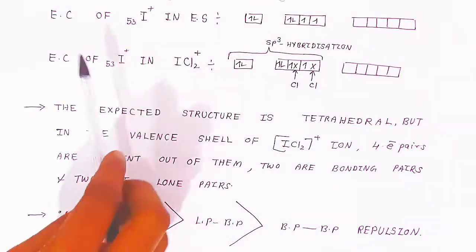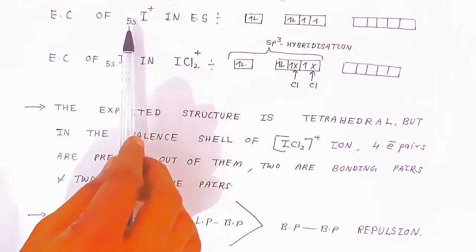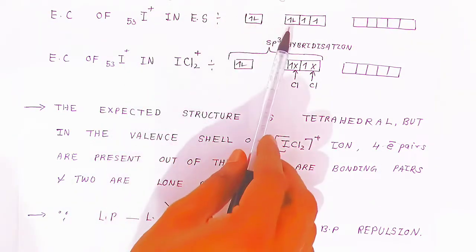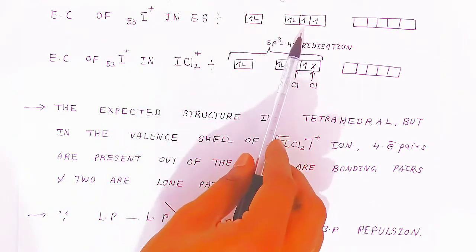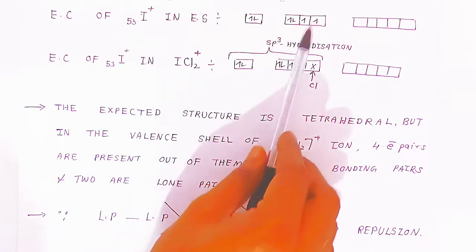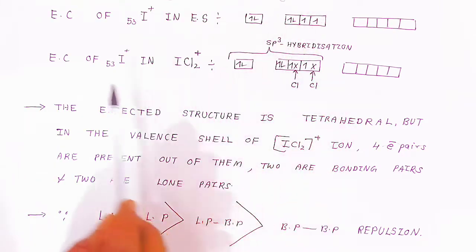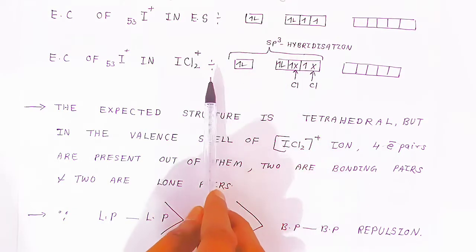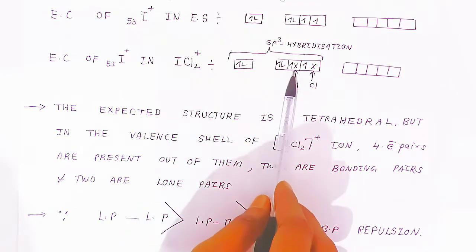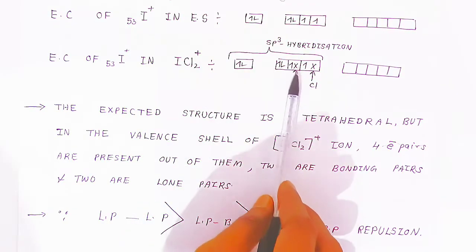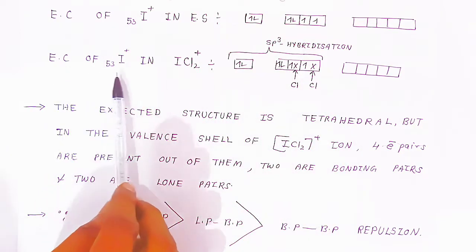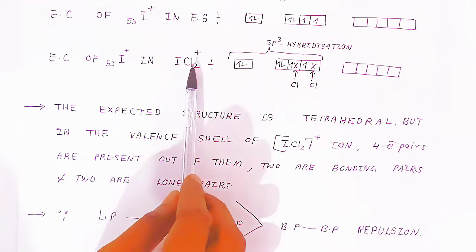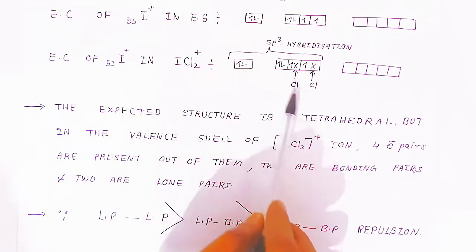At the excited state of I⁺, one of the electrons will excite and occupy the p orbitals, giving unpaired electrons. There will be sp³ hybridization. Two chloride atoms will come with one unpaired electron each and will overlap, forming the combined electronic configuration of ICl₂⁺.